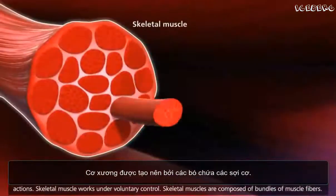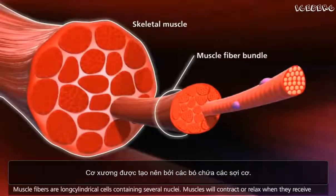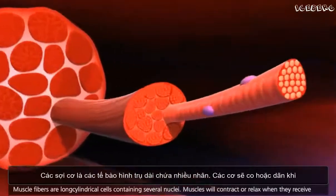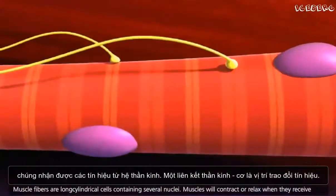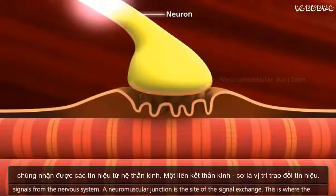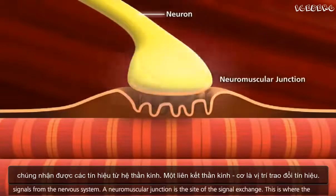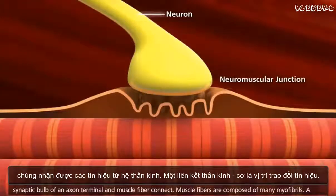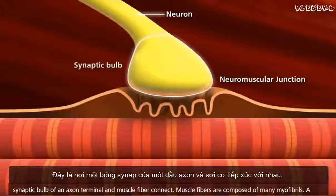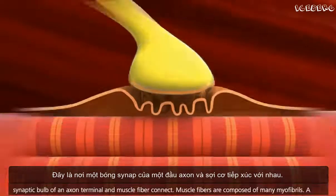Skeletal muscles are composed of bundles of muscle fibers. Muscle fibers are long cylindrical cells containing several nuclei. Muscles will contract or relax when they receive signals from the nervous system. A neuromuscular junction is the site of the signal exchange — this is where the synaptic bulb of an axon terminal and muscle fiber connect.